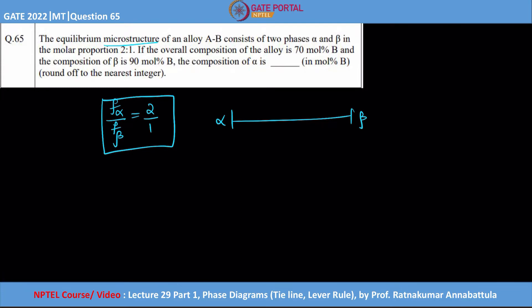They are telling that the beta has 90% of B in it because it is an AB alloy. Alpha we do not know, let us assume to be x. The common or the overall average composition of this alloy is 70% B.